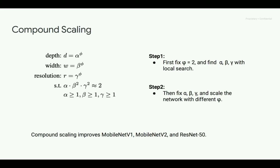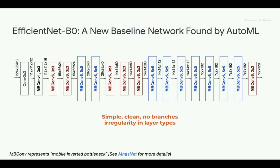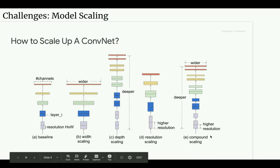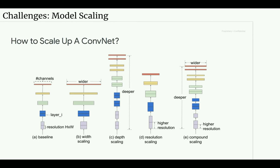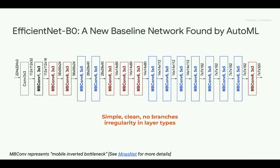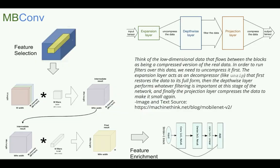Once we have the good baseline architecture found by neural architecture search — EfficientNet-B0 — we use compound scaling, which simultaneously increases input resolution, depth, and number of channels, to create a whole family of models called the EfficientNet variants (B0–B7).